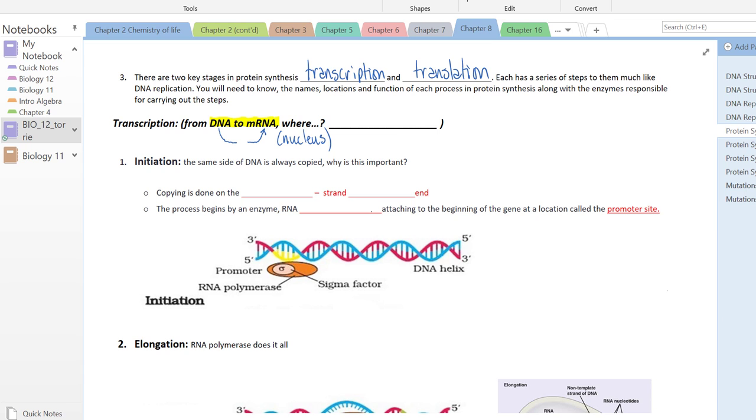The first step in transcription is called initiation. What's happening here is a specialized enzyme, RNA polymerase. If you remember DNA replication used the enzyme DNA polymerase because it was making a strand of DNA. This is called RNA polymerase because we are making a strand of RNA, specifically mRNA.